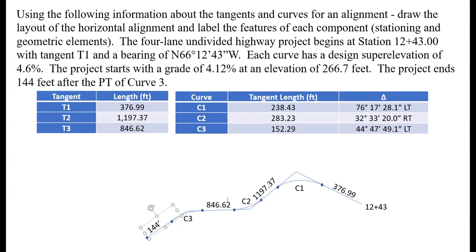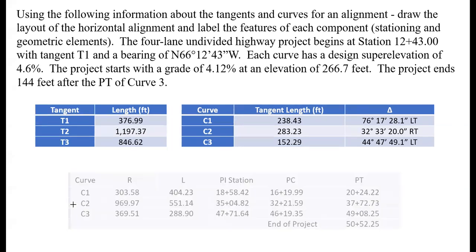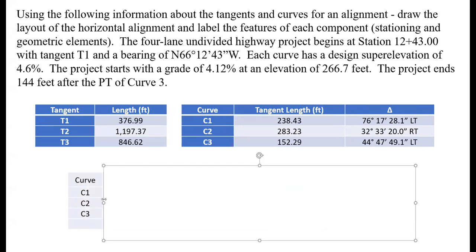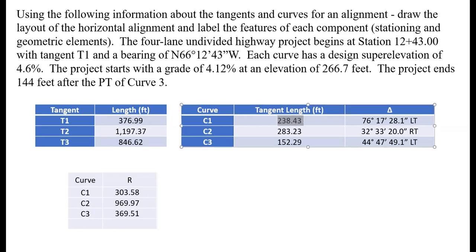I'm going to add feet to the end of this. Ultimately we want to identify the PC and PT of each of these curves and our final endpoint. I'm going to set up a table here with our curve information, starting with our radius. We can find the radius of each curve by using the information about the tangent length for each curve, dividing that by the tangent of delta. So for curve one, we're taking this tangent length 238.43, dividing it by the tangent of 76°17'28.1". That's how we're going to find each of those radius values.